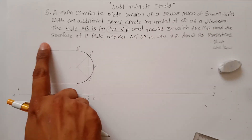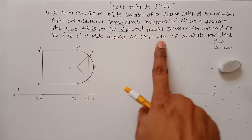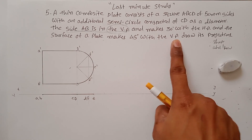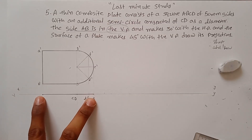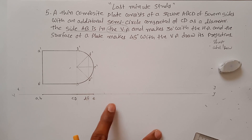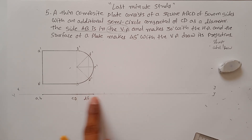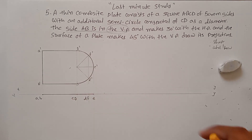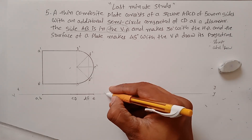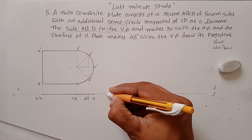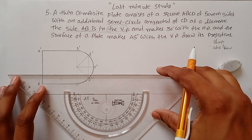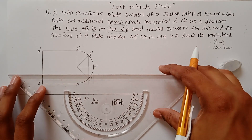This is the front view and top view of your composite plane in the first position. Now the side AB makes 30 degrees with the HP and the surface of the plate makes 45 degrees with the VP. So you have to make inclination at an angle of 45 degrees with the same length. First measure the distance, then measure the angle of 45 degrees.